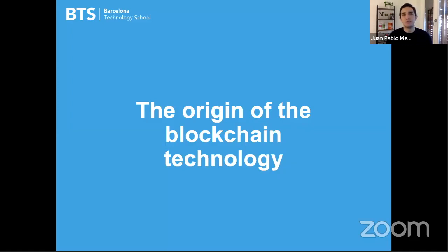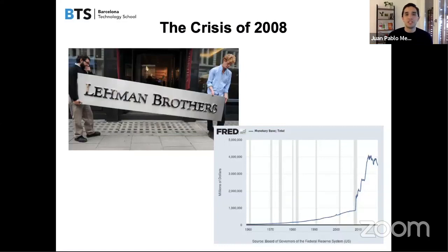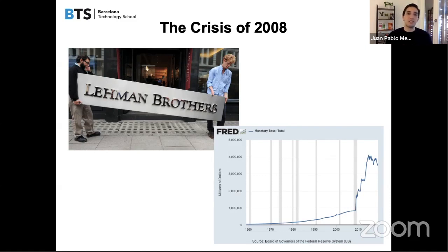The origin of blockchain technology: it started basically in 2008 when Lehman Brothers went bankrupt. This was a tough time for the world — the beginning of the financial crisis of 2008. The problem was that banks were doing malpractices: they were issuing debt they knew wasn't going to be paid, packaging that debt, and selling it to institutional investors, retail investors with money. When the whole system collapsed because people couldn't pay, almost all the financial system went down.